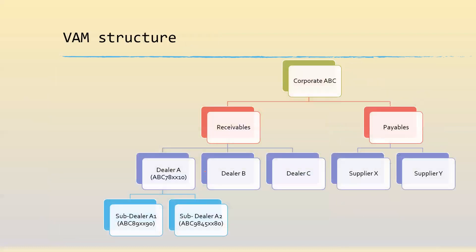Now let's take the WAM structure, which we showed in the first series, to understand how the transaction works. In this flow, you have the corporate ABC, which has two dealers, dealer A and dealer B. Dealer A is given a virtual account, ABC followed by the mobile number, so that it's easy to remember. Similarly, for sub-dealer A1, you have ABC followed by its mobile number, and dealer A2 with ABC and its mobile number.